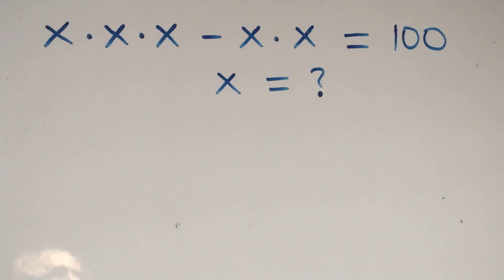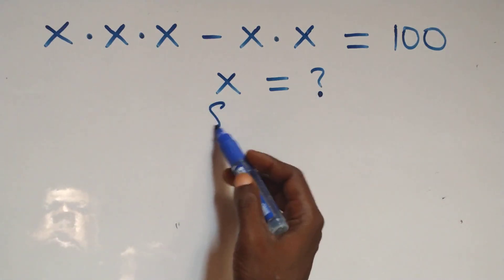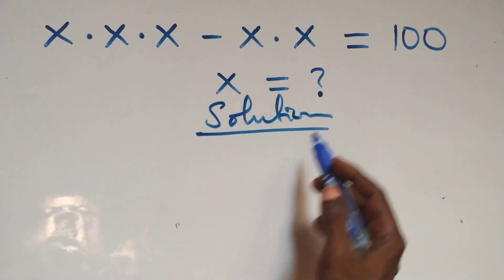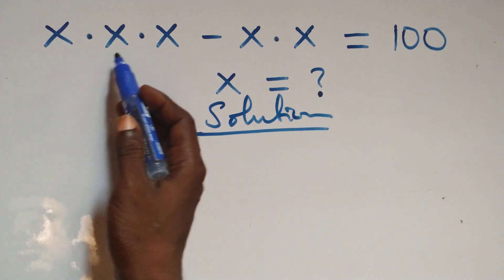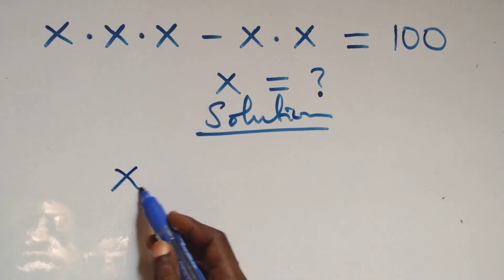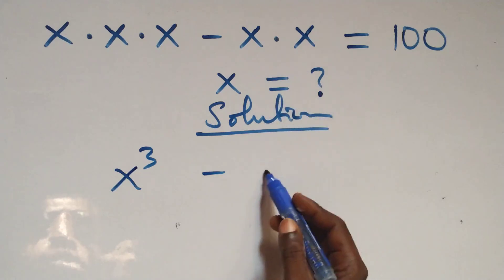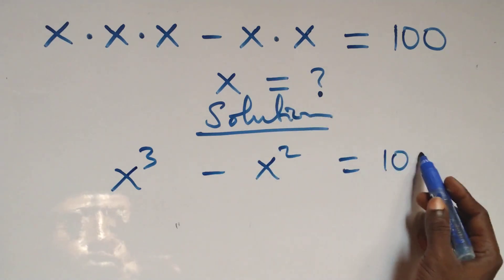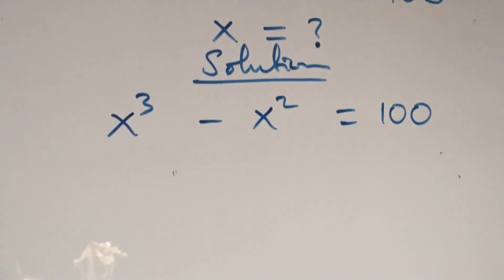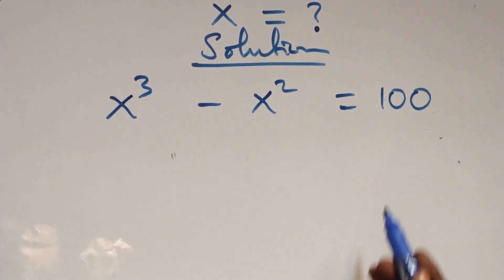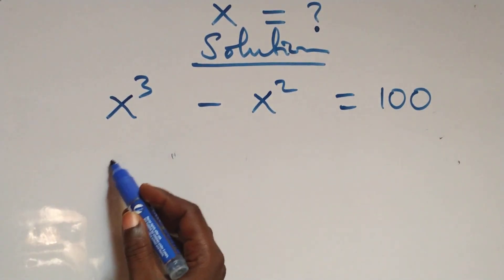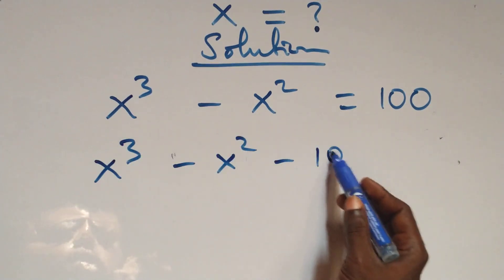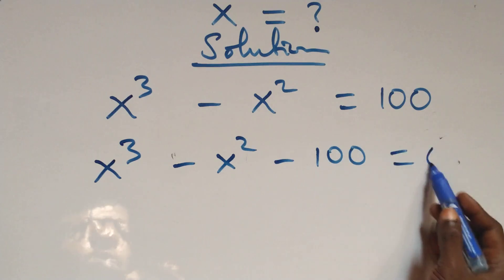Hello, you're welcome. Here we solve this algebraic equation. We can write x times x times x as x cubed, minus x times x as x squared, which equals 100 on the right side. The next step, we take 100 to the left hand side, and this becomes x cubed minus x squared minus 100 equals 0.